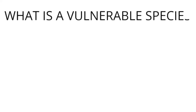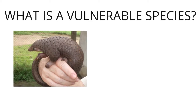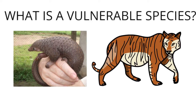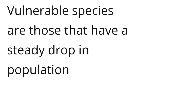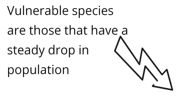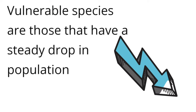What is a Vulnerable Species? A vulnerable species is any kind of species that is at risk of becoming extinct. Often species are vulnerable because they lose their homes. Vulnerable species are those that have a steady drop in population over time. Finally, these species will likely become endangered or extinct if threats to their survival aren't fixed.